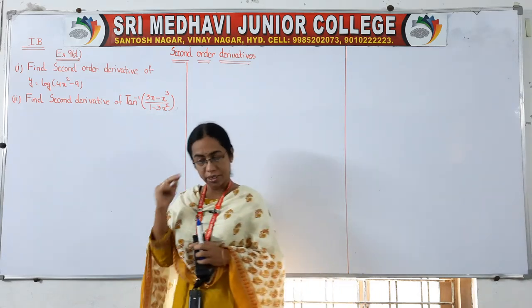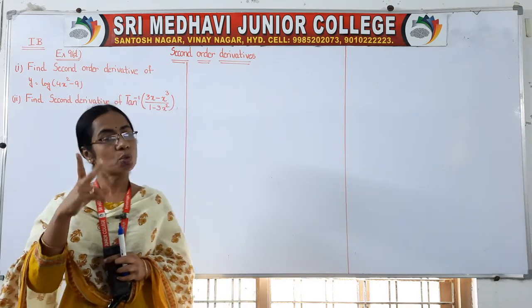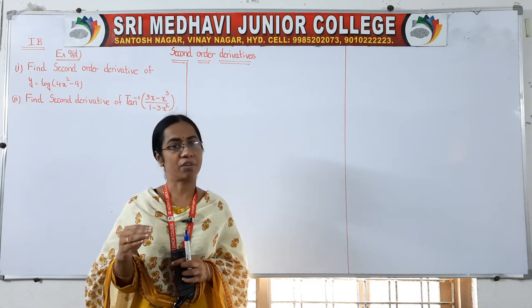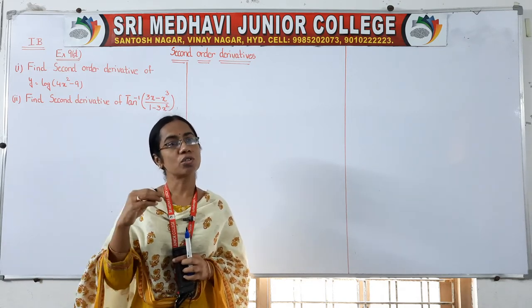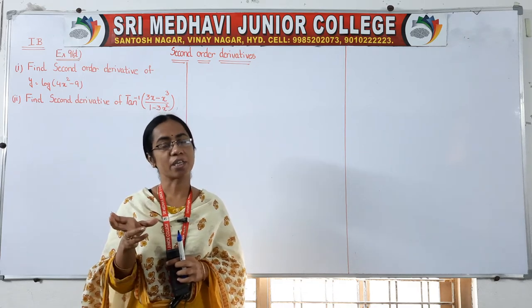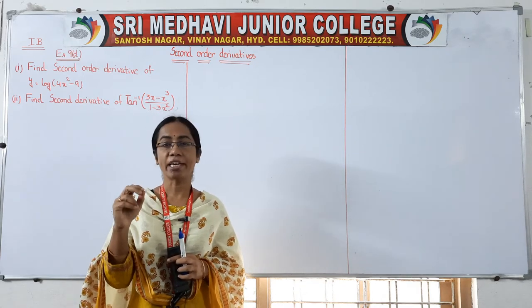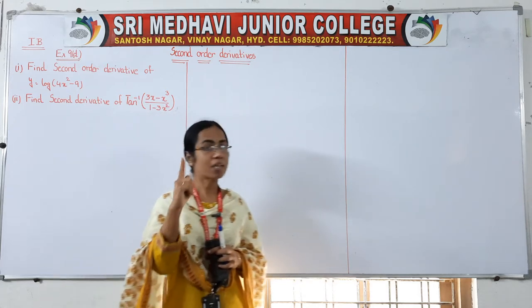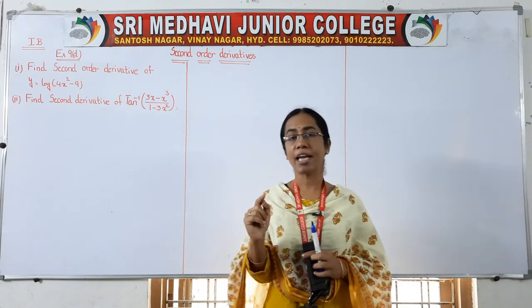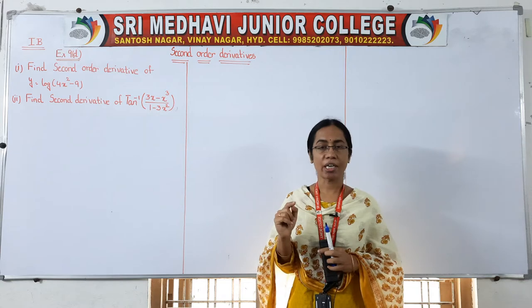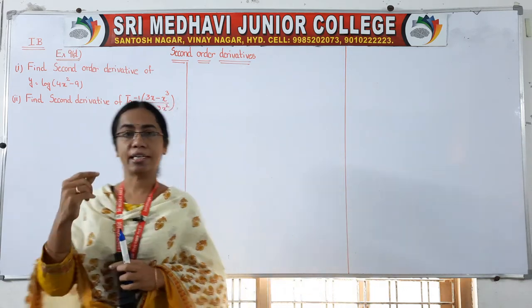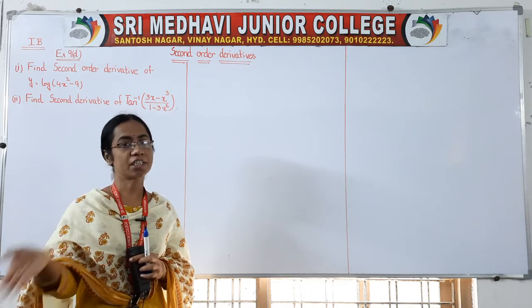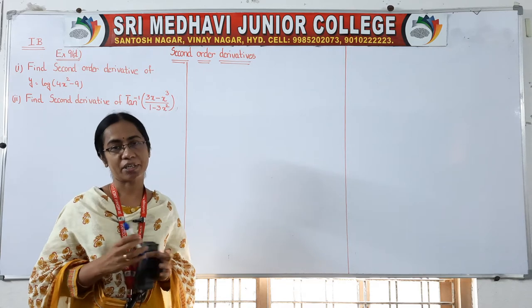In this chapter, there are 2 types of questions they can ask. In one type, they will directly ask you to find the second derivative. In another type, they will give a 'show that' problem — some equation will be given containing y double dash. So y dash means first derivative of y, y double dash means second derivative of y. Whenever the second derivative is asked, just differentiate it once, then differentiate again to get the second derivative value.